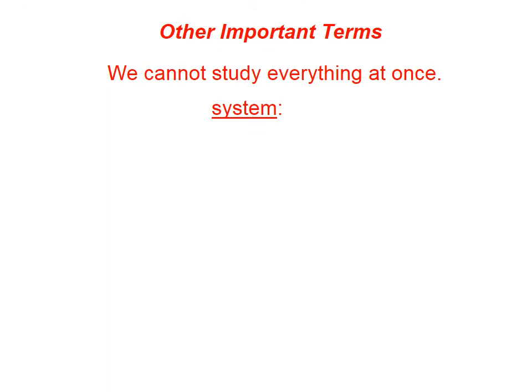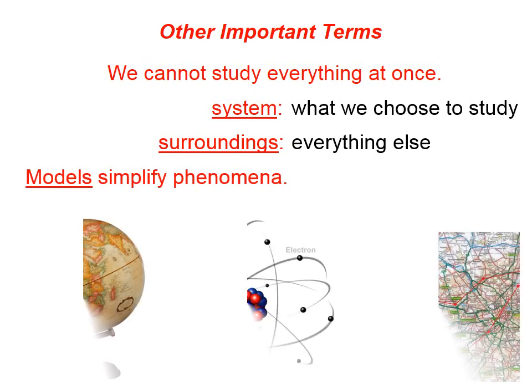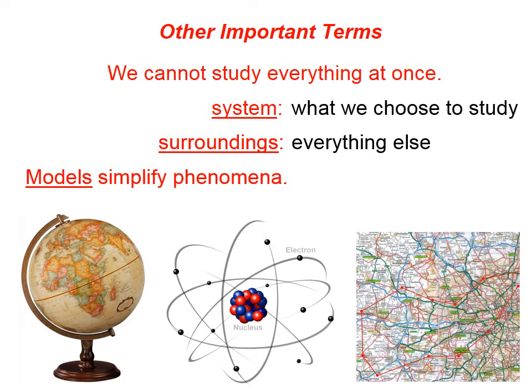Other important terms when we're studying things in science: the system is what we choose to study. The surroundings, on the other hand, is everything else. Generally we can't study everything at once, so we focus on certain things, and those things that we're focusing on we call the system.